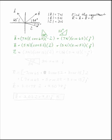Vector C is going to have a negative j component, 3 newtons times cosine of 15 in the positive i direction, and 3 newtons times sine of 15 in the negative j direction.